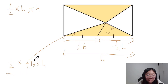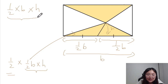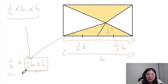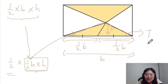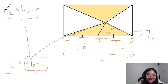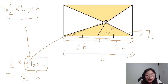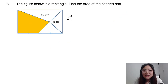Half times base times height is the area of the bigger triangle — let's call it tb. So the smaller triangle is just half of tb, half of that bigger triangle. Now let's look at the last question, which is a very interesting one asking for the shaded area inside a rectangle.